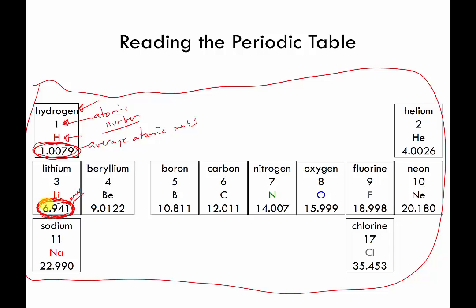Just like if the average on the exam is 81 percent that does not mean that everyone scored 81 percent. Some people scored above. Some people scored below. But the average is 81 percent. Here some lithiums weigh more than 6.9. Some weigh less than 6.9. But if you average their weights they come out to this. That's what this number means.